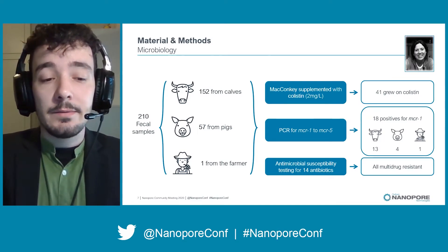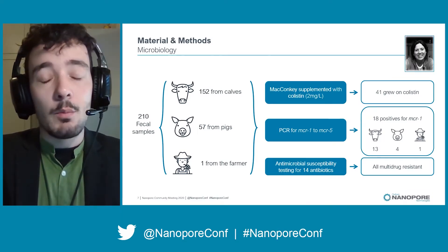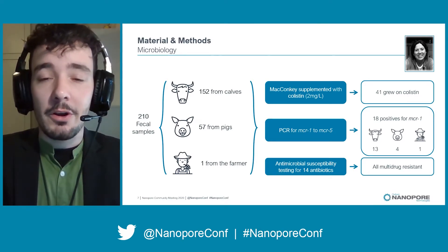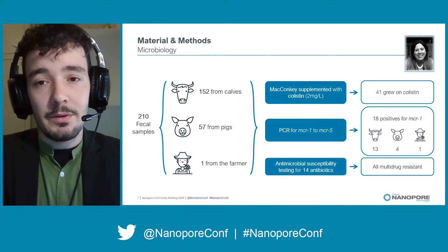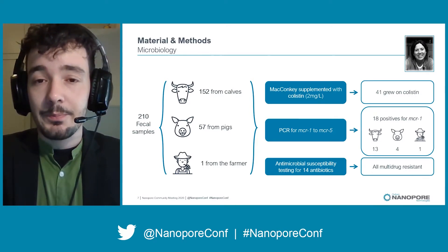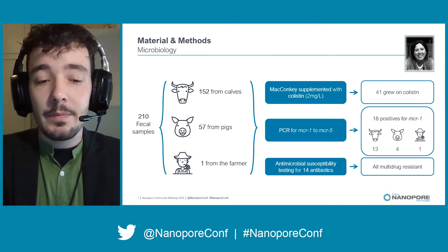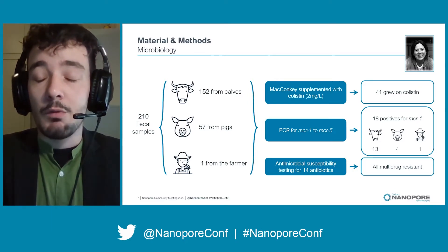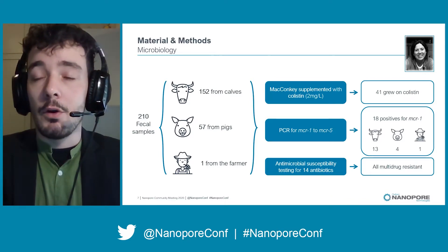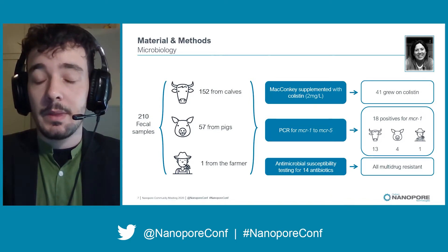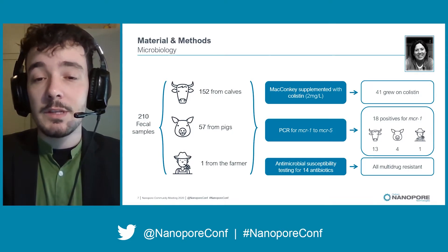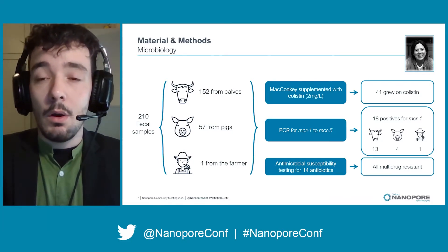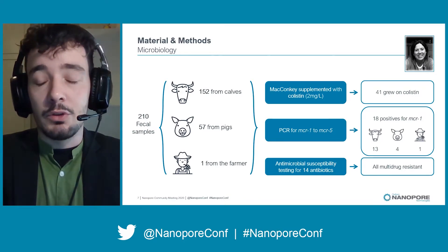210 fecal samples were collected and homogenized. Then we plated the samples onto MacConkey supplemented with colistin and 41 grew. Then we performed PCR for 5 MCR genes and retrieved 18 positives for MCR1. Finally, we performed antimicrobial susceptibility testing for 14 antibiotics and all isolates resulted multi-drug resistant.